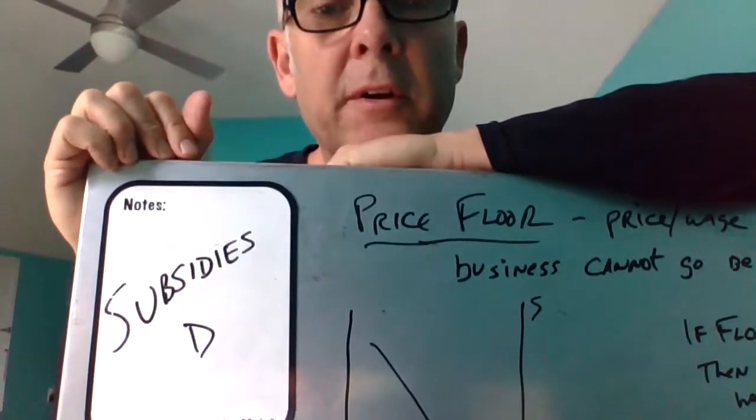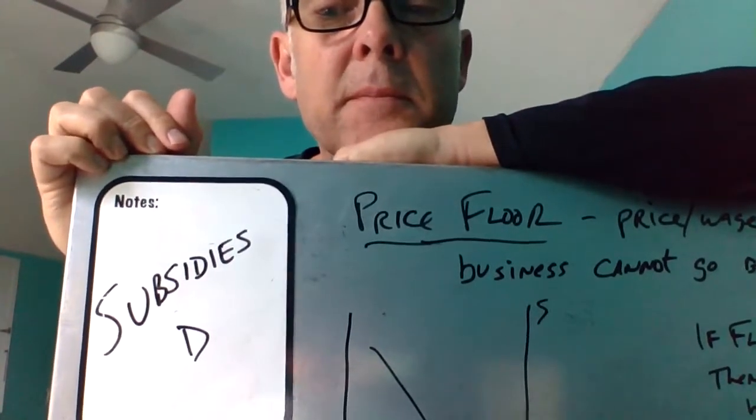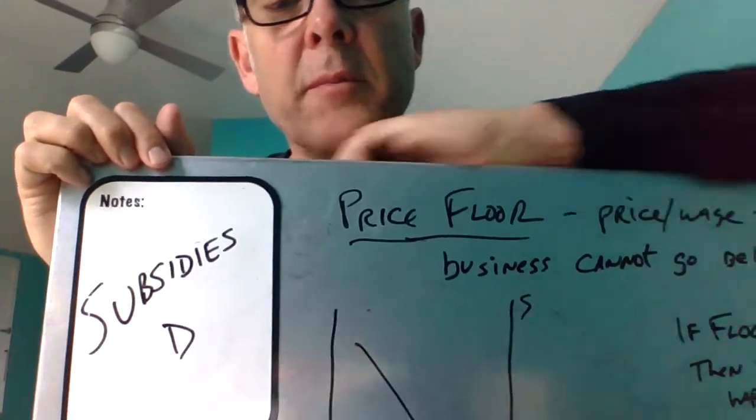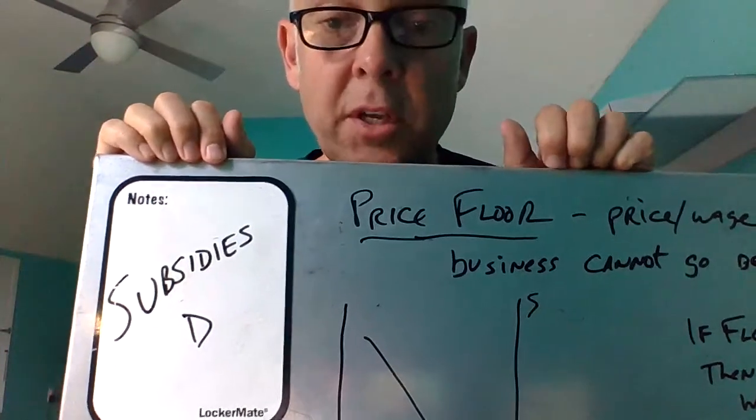This is called a price floor, another example of when the government intervenes in the market. The best example I can think of is a minimum wage, which is an example of a price floor.